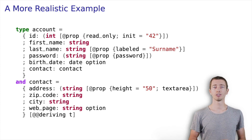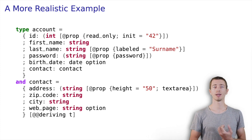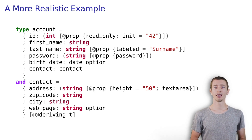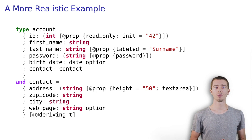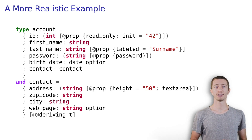The form-creating function checks for certain keys and, if present, takes into account the corresponding values. In this example, we add a read-only property and an initialization value to the ID field. We also change a label from last name to surname. We hide a password and make the address a multiple-line input. These properties are attached to the runtime type itself. The form-creating function is merely consuming them. Consequently, they can be consumed by other functions as well.